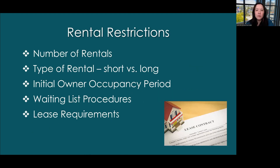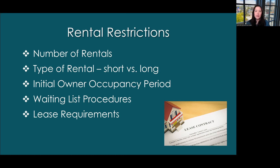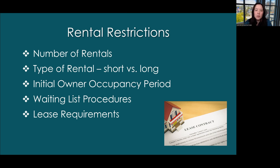There are a few other rental restrictions you may see. There's an initial owner occupancy period, which may require that if you buy a condo, you'll have to live there for the first two or three years, after which you may either be able to rent it out or go on a waiting list. Waiting list procedures may involve a standing list with the property manager, or some complexes will broadcast opportunities to all homeowners and assign by seniority — whoever has owned their condo the longest.